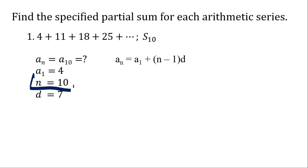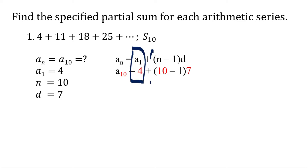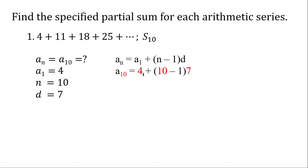You might ask, where do I get this 10? I get that here, because we need to find the 10th term — we need to find the sum of the first 10 terms, so that would be the value of our n, the number of terms needed. If we substitute that and solve for a sub 10: 10 minus 1 is 9, and 9 times 7 is 63, and 63 plus 4.